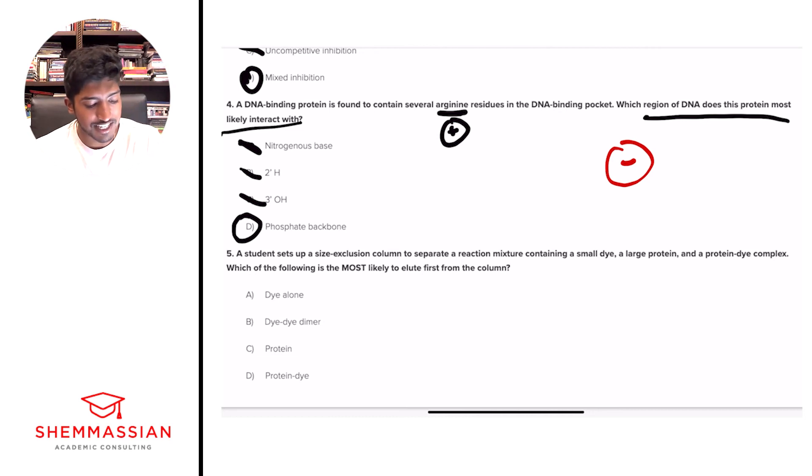Finally, 5. A student sets up a size exclusion column to separate a reaction mixture containing a small dye, a large protein, and a protein dye complex. Which of the following is most likely to elute first from the column? A, dye alone, B, dye dye dimer, C, protein, D, protein dye. All right, so when we're doing this, we have to understand what size exclusion column looks like. So I'll draw it as a diagram.